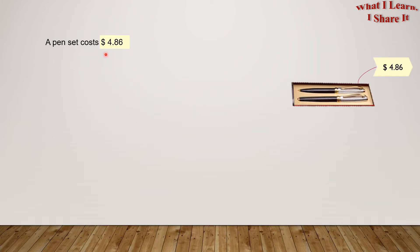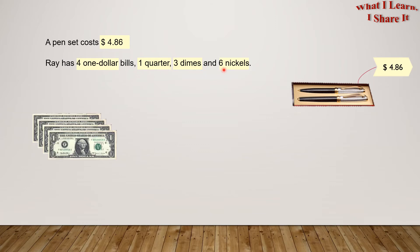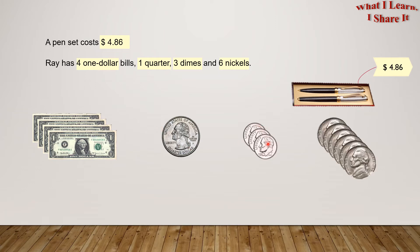A pen costs $4.86. So here's the pen set, and it costs $4.86. Ray has four $1 bills, one quarter, three dimes, and six nickels. So here are Ray's four $1 bills. Here's his quarter, his three dimes, and six nickels.